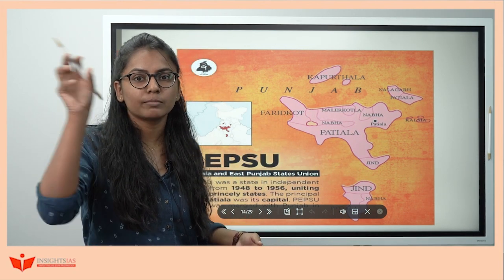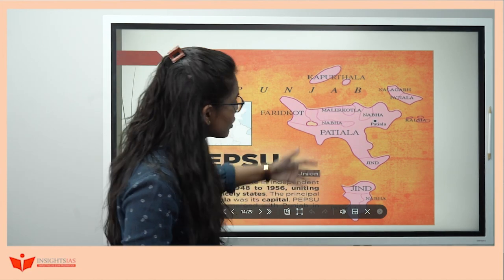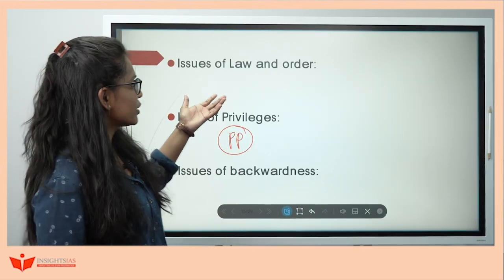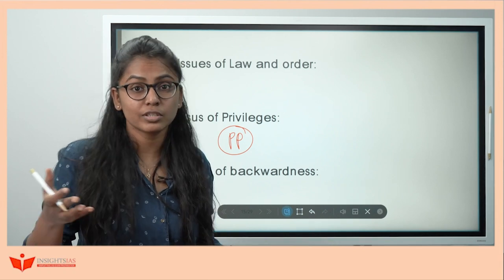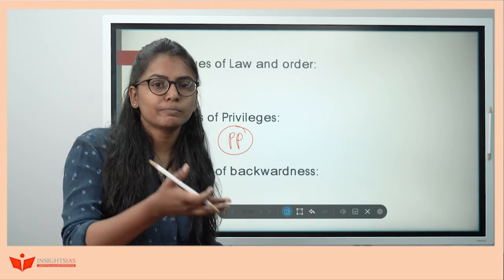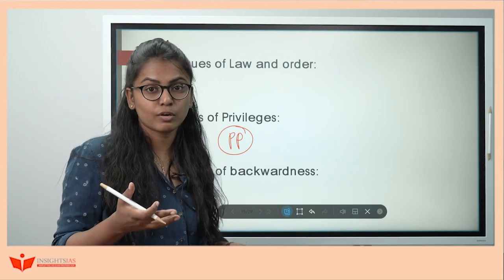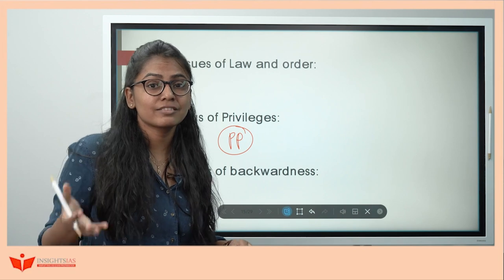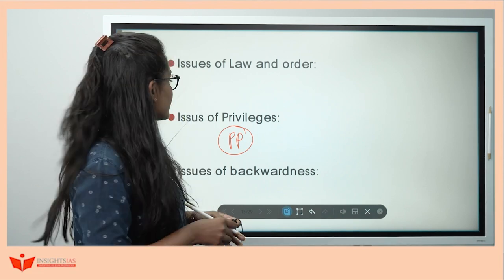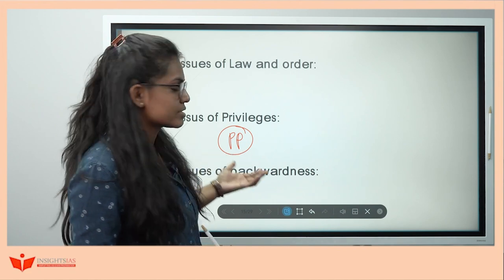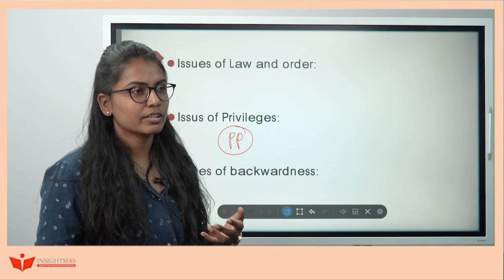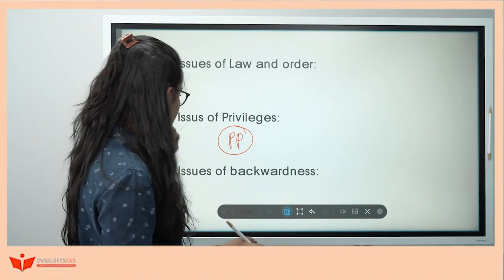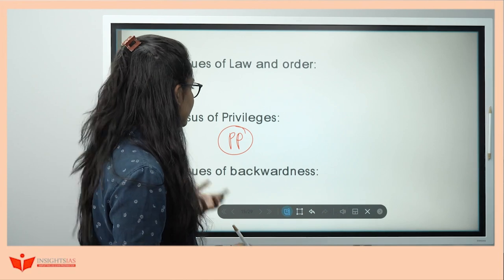Even though Pondicherry is a union territory, it exists in different states, so administering it was quite a challenge. Then the issue of law and order: popular will was something else — people wanted to stay with India — but the rulers wanted to join Pakistan. Here you can give the example of Mahavat Khan, ruler of Junagadh, who had already signed the instrument of accession to join Pakistan. Then the issue of privileges: the private purse through which the government gave money to rulers so they would join India, but they felt the amount was too little.